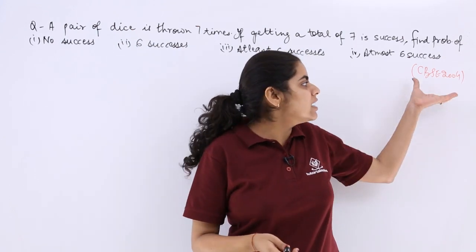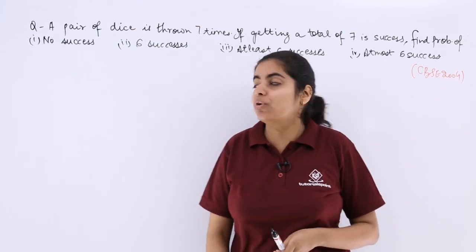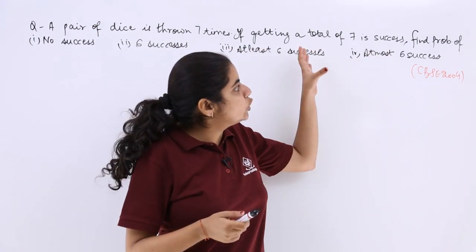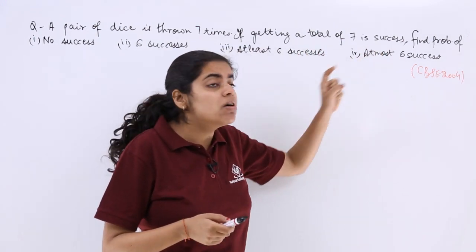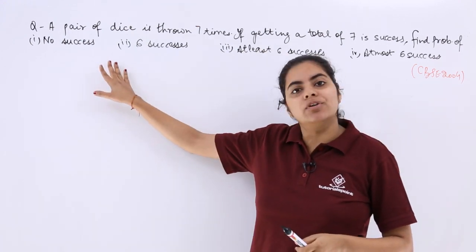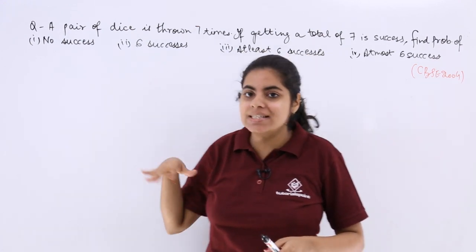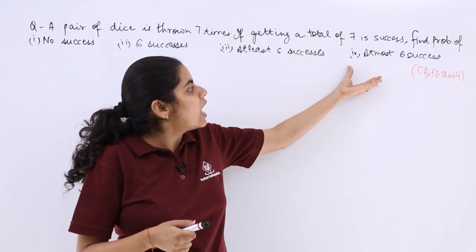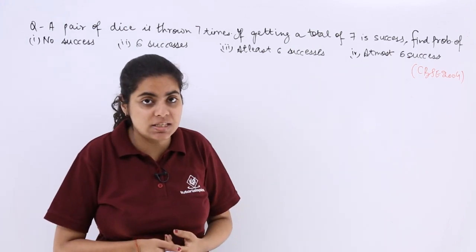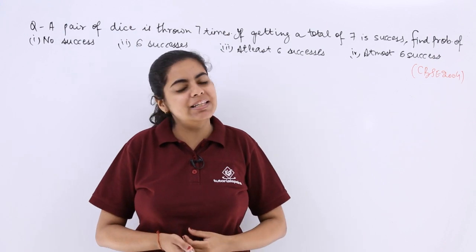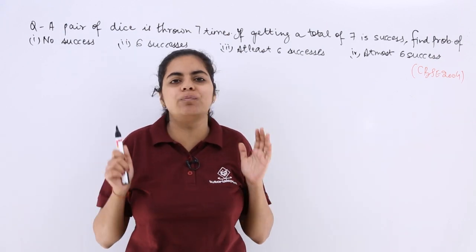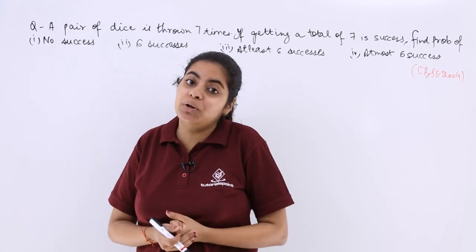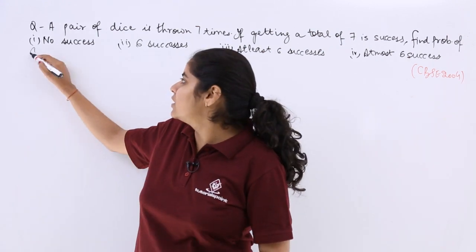So now this is a question asked in the CBSE examination 2004. It says a pair of dice is thrown 7 times. If getting a total of 7 is a success, find the probability of no success, 6 successes, at least 6 successes, at most 6 successes. So these are the 4 parts and these will make clear the whole picture of Bernoulli trials and binomial theorem or binomial expansion or binomial distribution. Let's start with the solution.